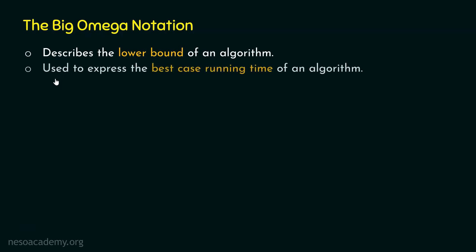Big omega notation is used to express the best case running time of an algorithm. We are talking about running time, but we can talk about memory space also. However, time is the most important factor, so we are focusing on time. Big omega notation expresses the best case running time because it describes the lower bound of an algorithm.